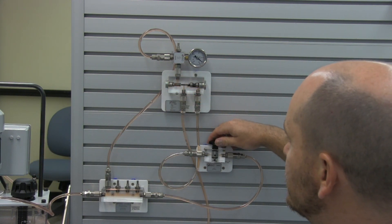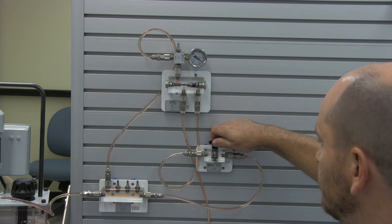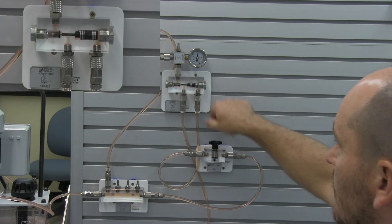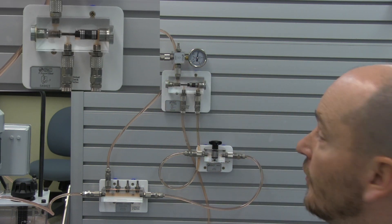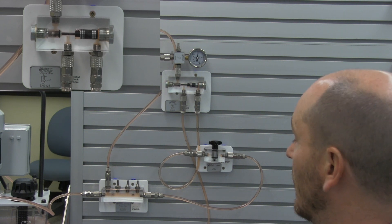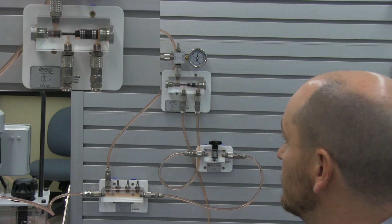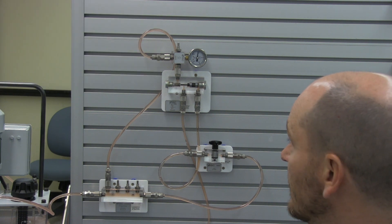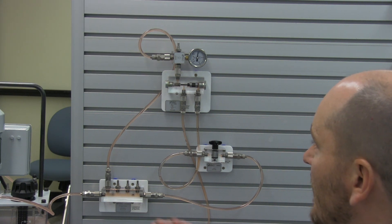Boom, right there. Now we're flowing, getting full flow through the system at about three bars. And that's how a pilot signal, that's how a pilot-operated check valve works.